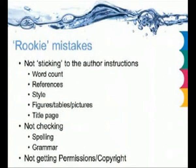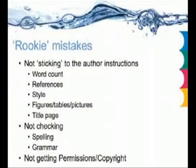Some of the mistakes I've come across during writing: not sticking to the word count. If they say 3,000 words, stick to 3,000 words. There are ways of reducing the word count, such as putting hyphens between words — for example, 'daytime' rather than 'day and time.' For references, make sure you have the correct number and they're written in the correct order. Use figures, tables, and pictures — check whether they want them in black and white or color. Some journals will charge for colored figures. Check the spelling and grammar, whether it's American or British English, and adjust that on your Word document.